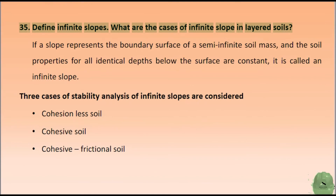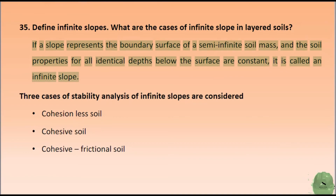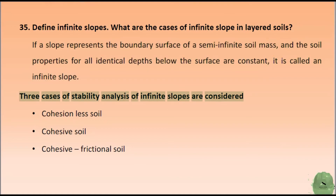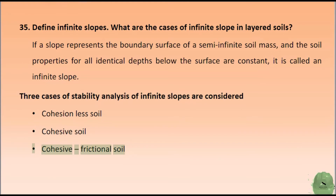Define infinite slopes. What are the cases of infinite slopes? If a slope represents the boundary surface of a semi-infinite soil mass and the soil properties for all identical depths below the surface are constant, it is called an infinite slope. Three cases of stability analysis of infinite slopes are considered: cohesionless soil, cohesive soil, and cohesive frictional soil.